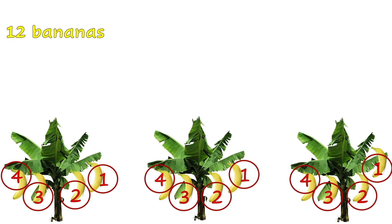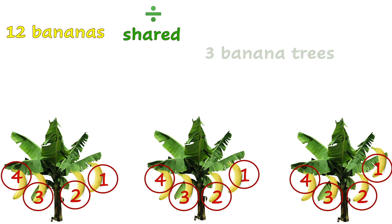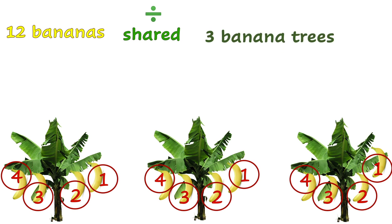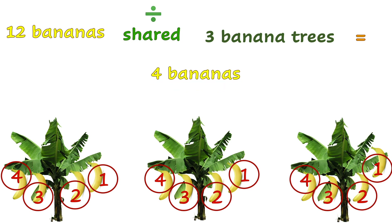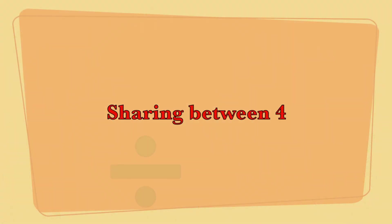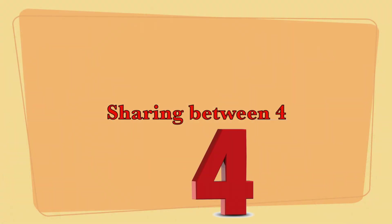So 12 bananas shared equally between three banana trees equals four bananas.